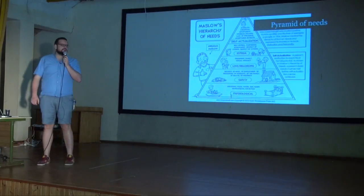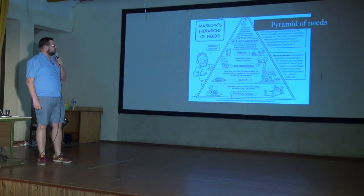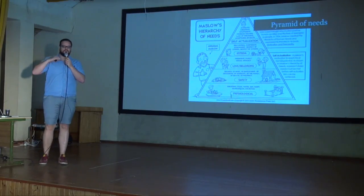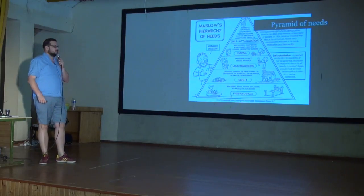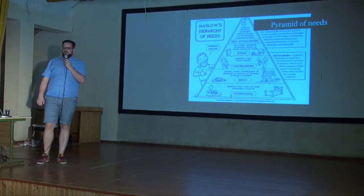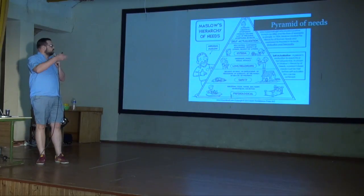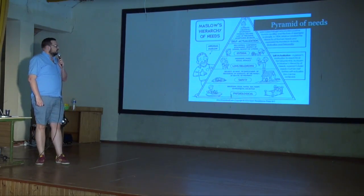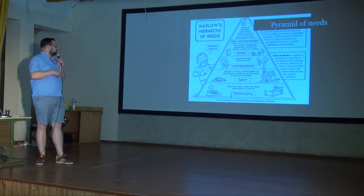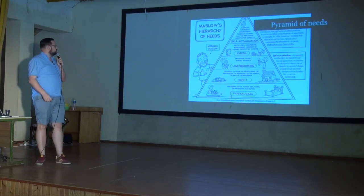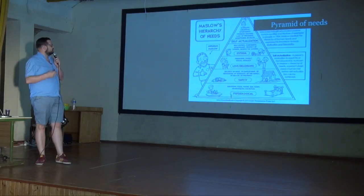This brings us to Abraham Maslow and his hierarchy of needs. At the bottom are the most basic needs — breathing, food, sleep, and so on. As we move up, we get to security of the body, whether I feel safe, whether my family and friends are safe, and then further up to belonging, self-esteem, confidence, and so on.